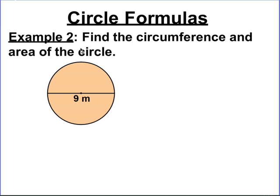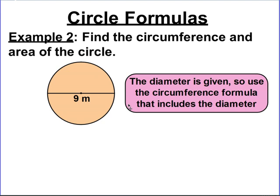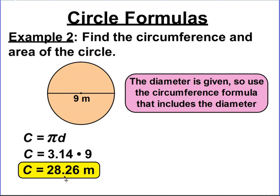So now let's try this one. Find the circumference and area of this circle. This time, we're given a diameter. So I'm going to use the circumference formula that has a diameter in it. C equals pi times d. And I'm going to substitute my numbers in. Pi is 3.14. d, the diameter here given, is 9. Multiply those together and the circumference is 28.26 meters. So again, meters is just meters because it's just distance around.